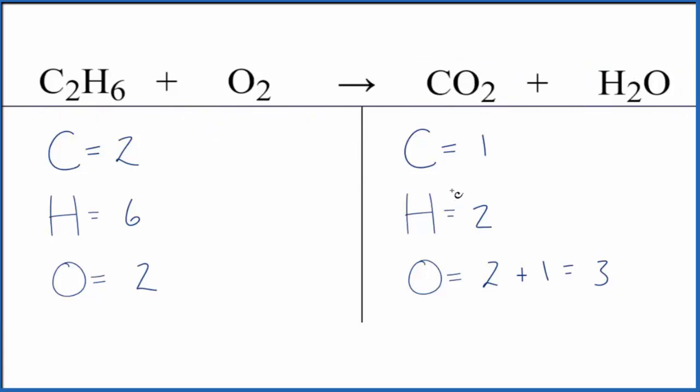I've already written down the number of atoms on each side. The only thing really to watch for is we have two oxygens here and one with the water. So make sure you count all of those up when you're balancing the equation for the combustion of ethane.